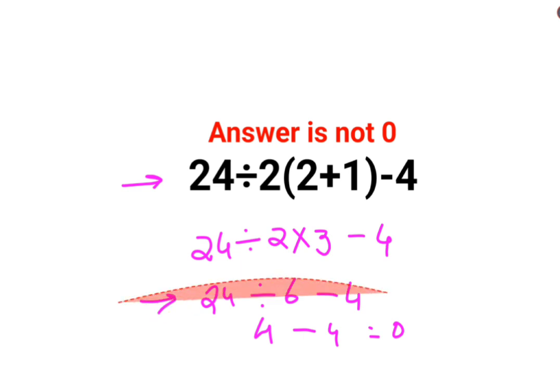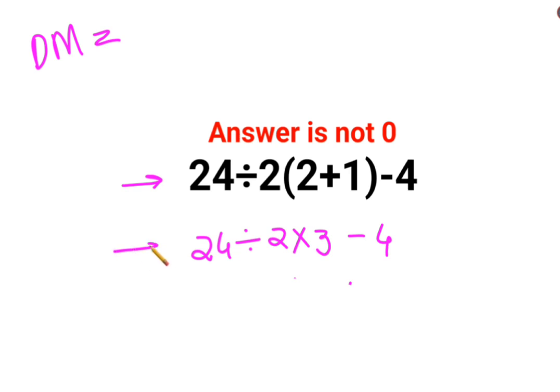What is the mistake? Please understand: division and multiplication hold equal precedence. So in sums like these you just go from left to right. Whatever operation happens first on your left hand side has to be done first.